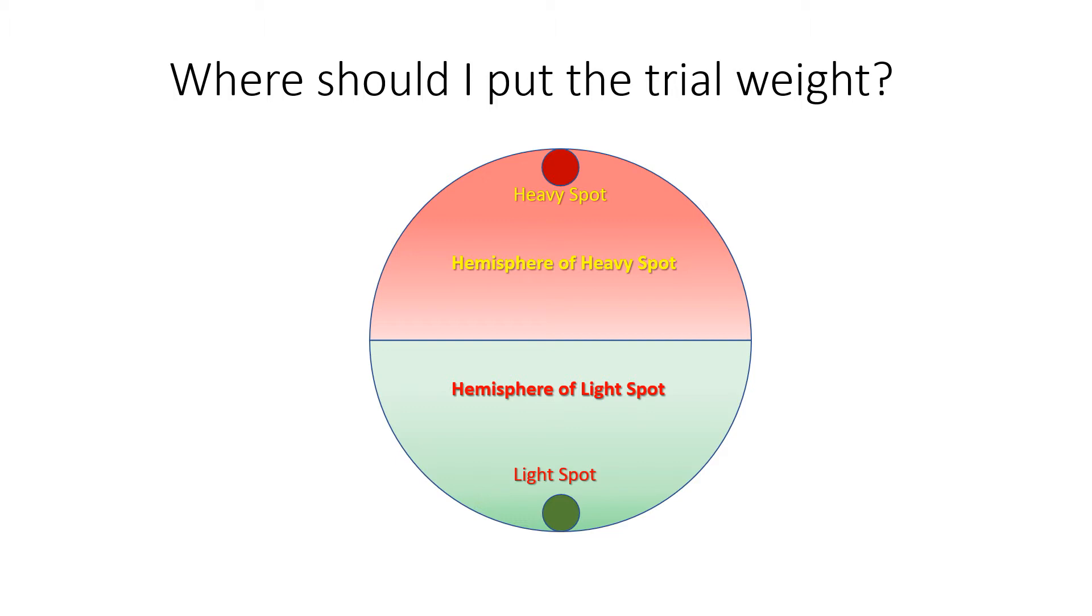This severe vibration can possibly damage the machine and also put the working people in danger. In this video we will show you how to locate the heavy spot before the trial weight is actually added. Knowing where the heavy spot is, you can reduce the vibration level effectively by adding the trial weight and making your balancing job safer and also quicker.